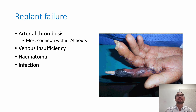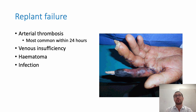Replant failure: the most common cause in the first 24 hours is arterial thrombosis. Venous insufficiency can cause failure in the following days. Haematoma or infection can cause failure later down the track.